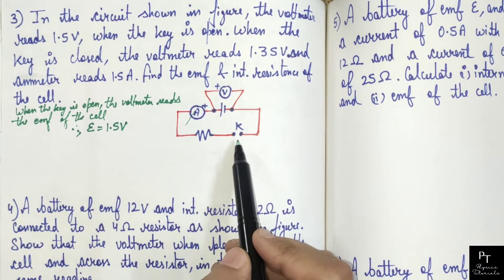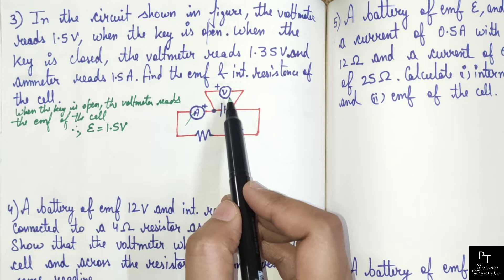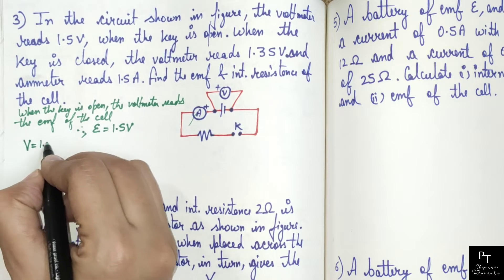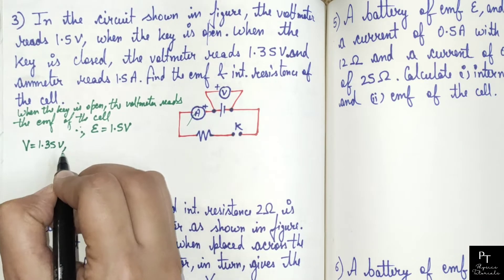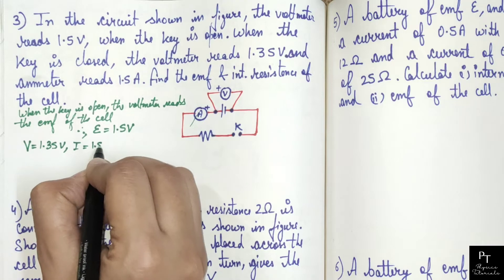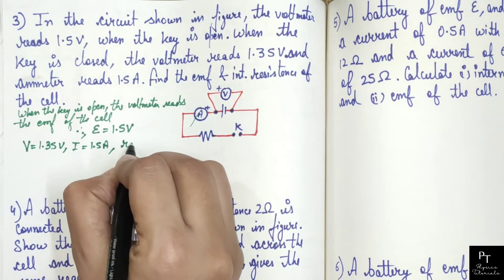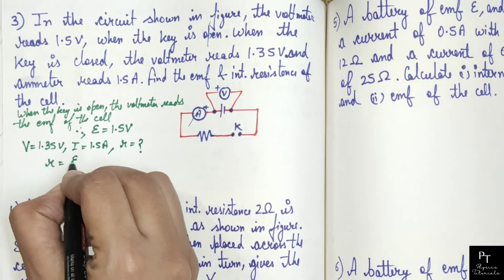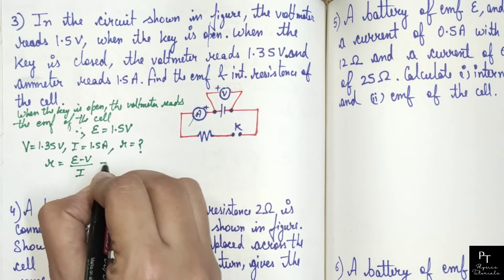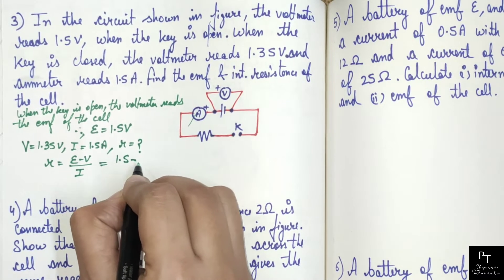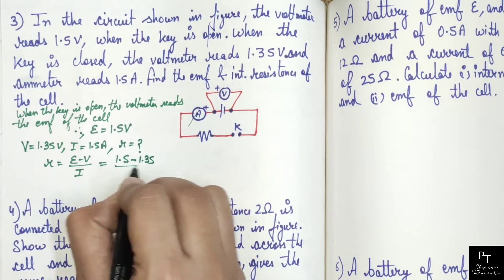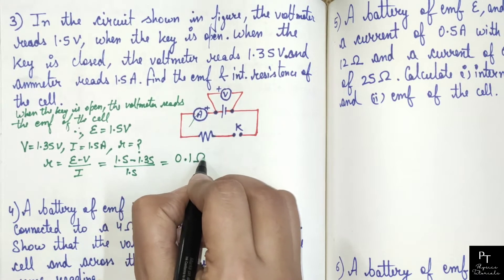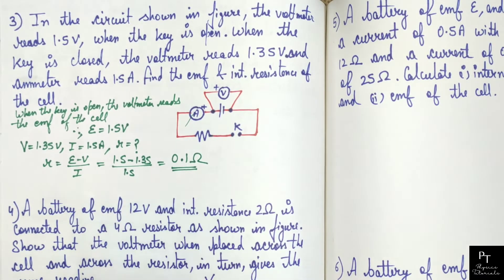When the key is closed, the voltmeter reads the terminal potential difference. Hence terminal potential difference across the cell equals to 1.35 volts. We have to find internal resistance of the cell. Internal resistance is equal to (E minus V) upon I. Substituting values, after solving you will get answer equals to 0.1 ohm. So this is the internal resistance of the cell.